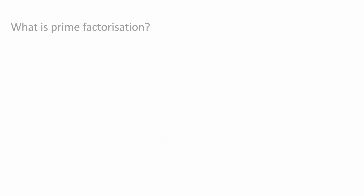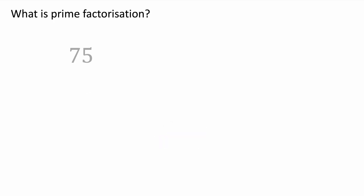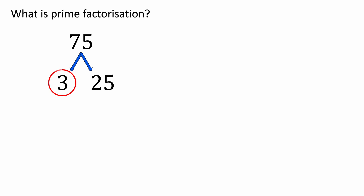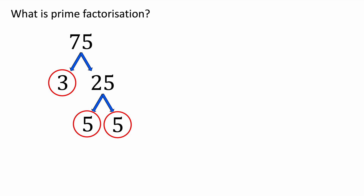So what is prime factorization? Here we have a number of 75 and I'm going to split it into its prime factors. We split it into 3 times 25, and 25 gets split into 5 times 5. If a number is prime we're going to circle it. If a number is not prime we're going to keep factorizing it, like we did with 25. And so 75 is 3 times 5 times 5.